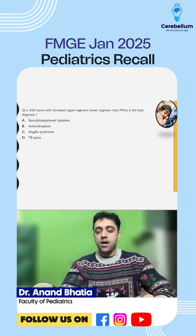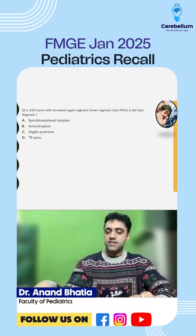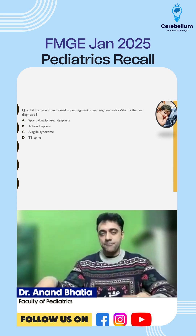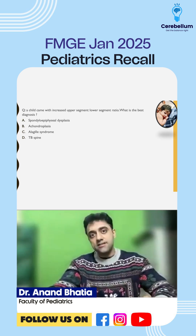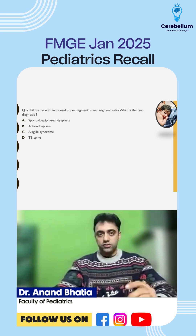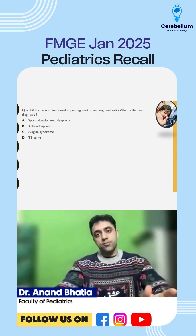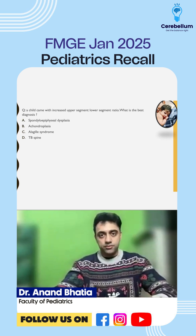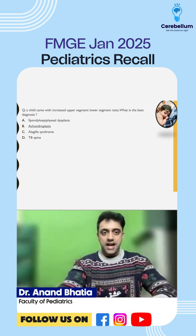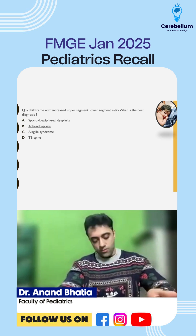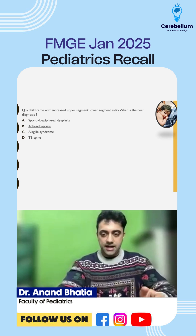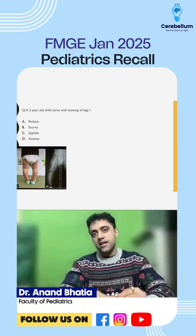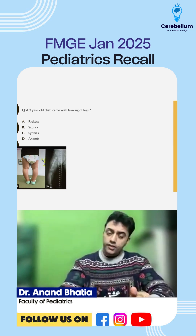One question came regarding the upper segment to lower segment ratio. A junior noted there was an increased upper to lower segment ratio. The top three examples of an increased upper to lower segment ratio are rickets, hypothyroidism, and achondroplasia — though achondroplasia was not given as an option in the question.